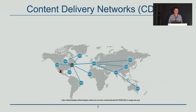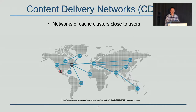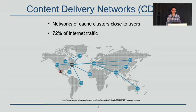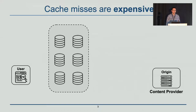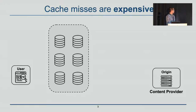Content delivery networks are networks of cache clusters that are deployed close to users. They cache and deliver content on behalf of content providers. According to Cisco, 72% of internet traffic today is delivered via content delivery networks. To better understand how content delivery networks work, let's look at this example.